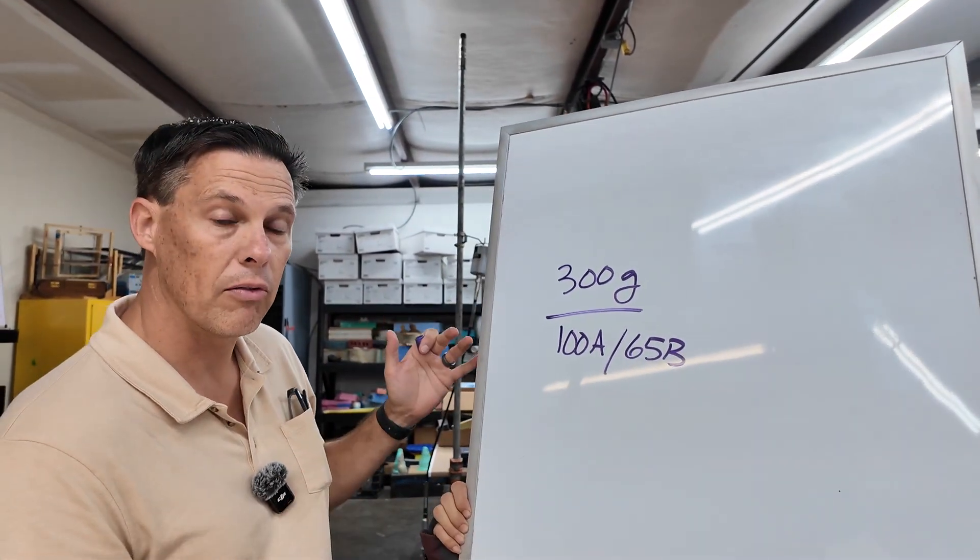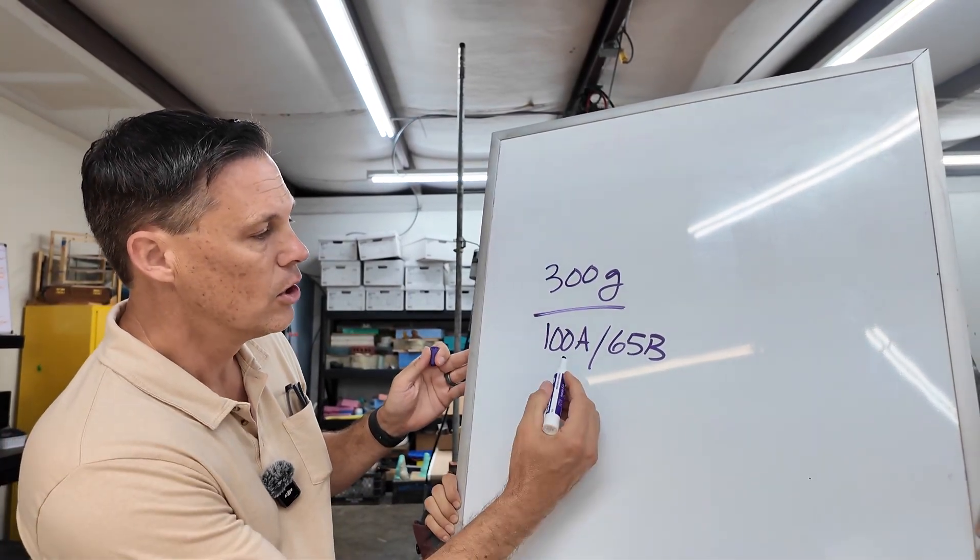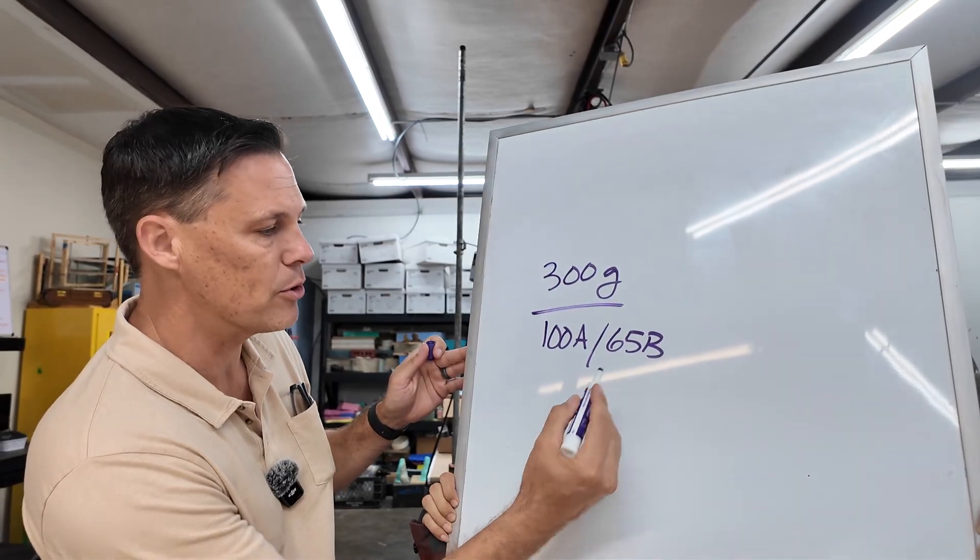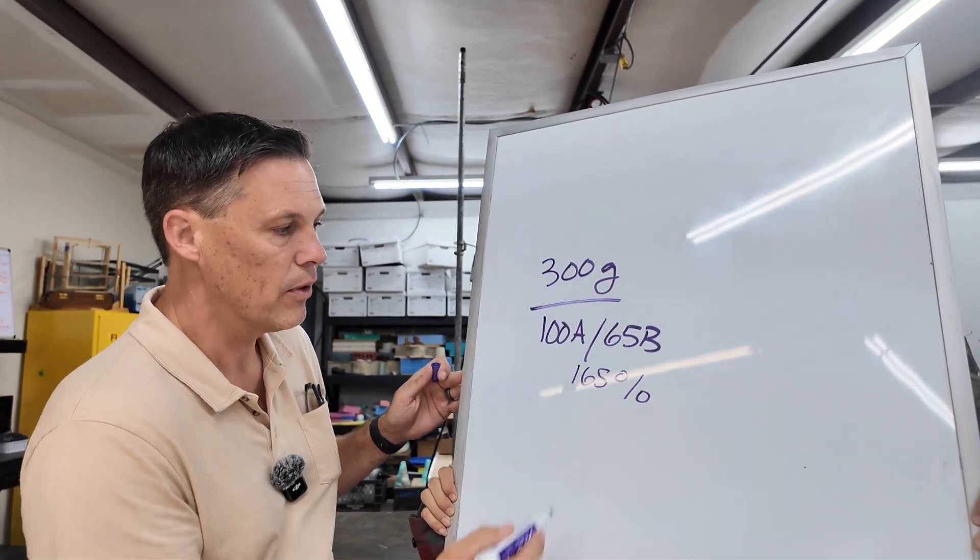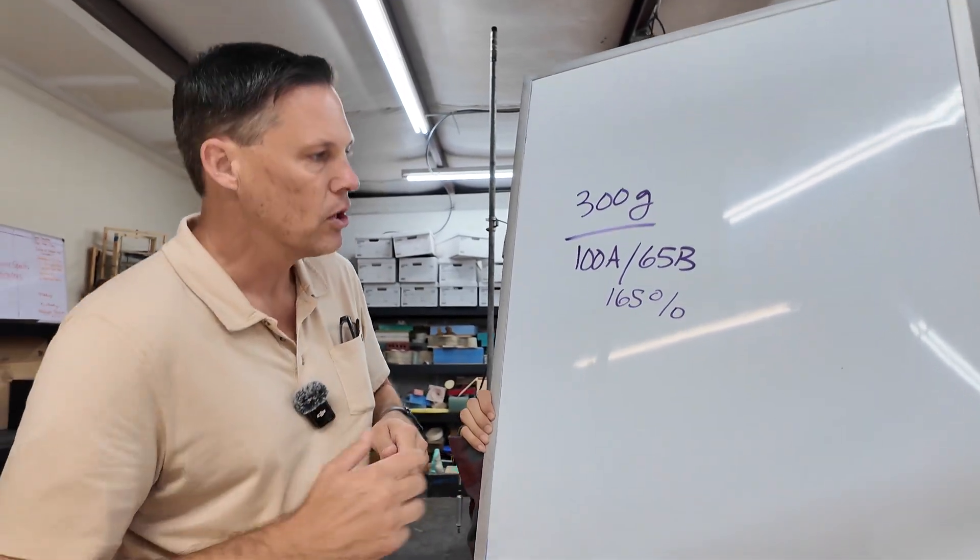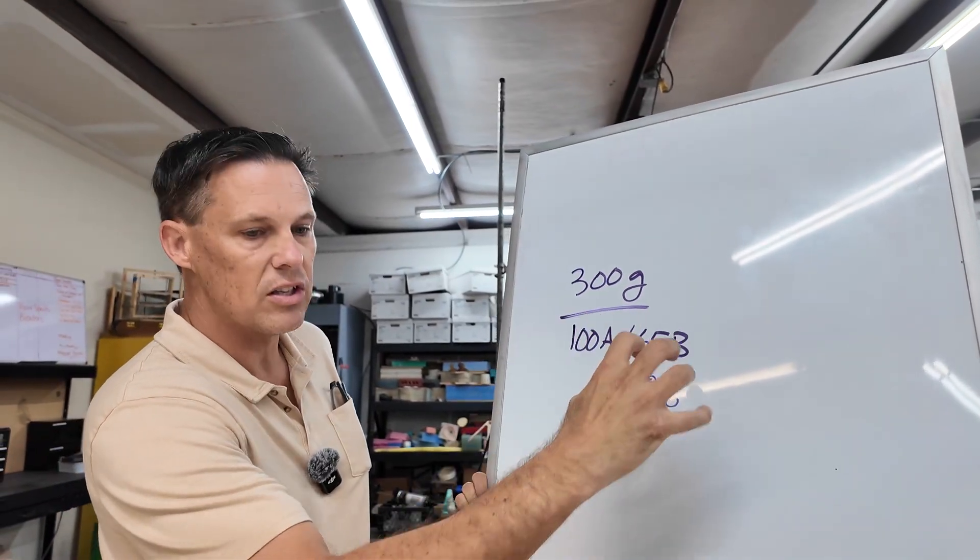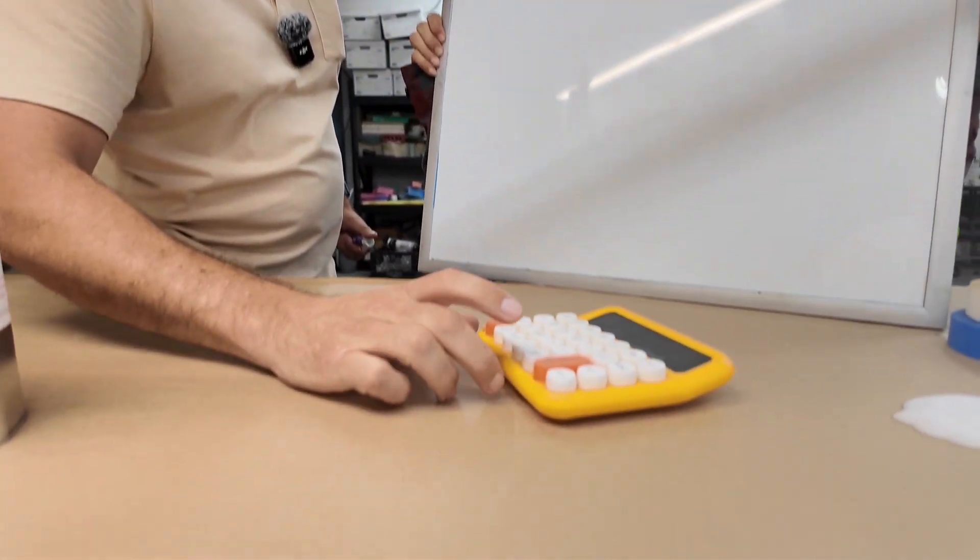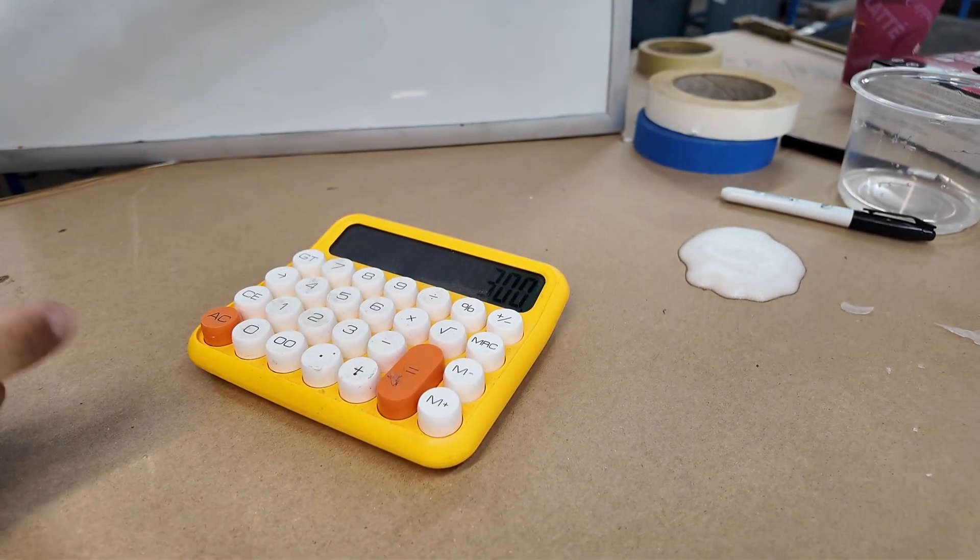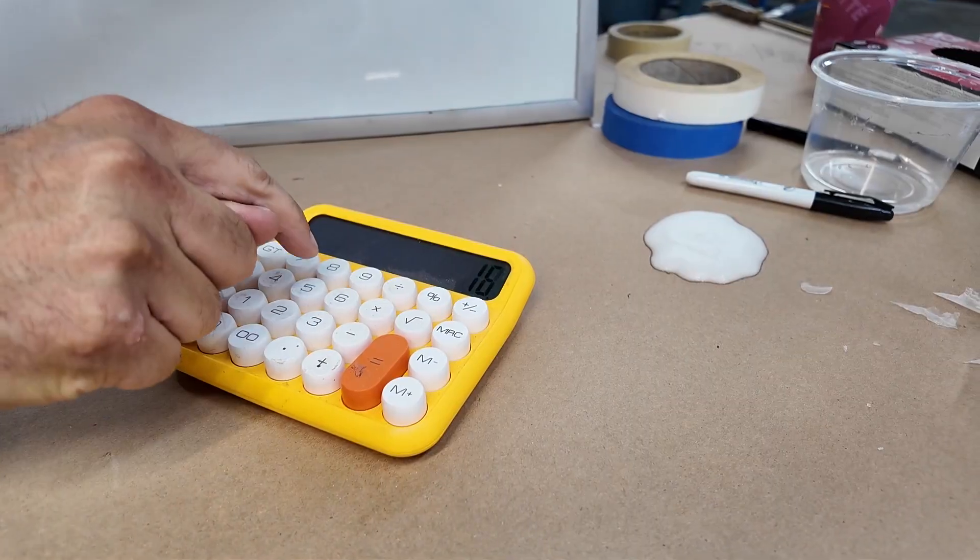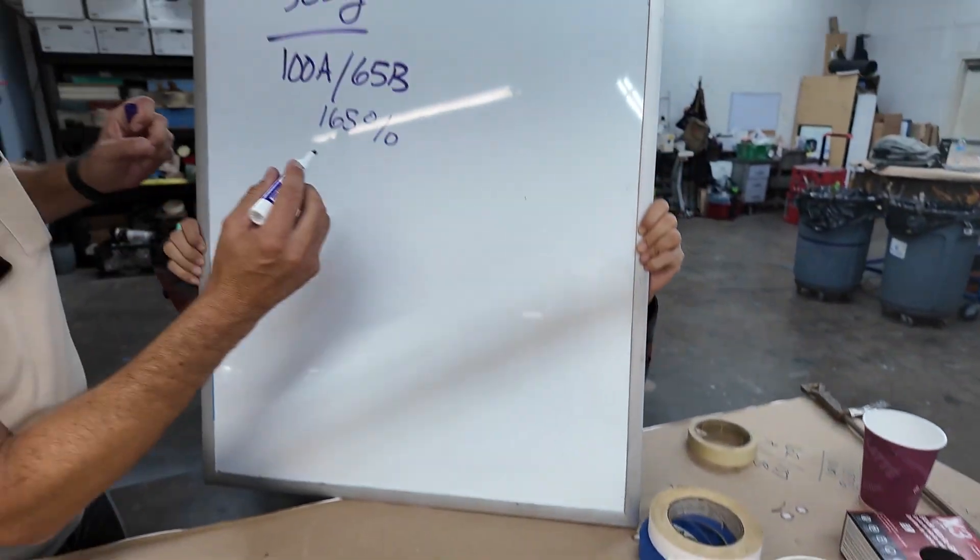To make this math easy, what I've learned over the years is to really simplify it. This is 100% plus 65%. That's 165%. That's going to be important when I punch this into the calculator. So I've got 300 grams, and I want to divide that by the total sum of 165%. So I take 300 and divide that by 165, hit the percent button, and I get 181.8.